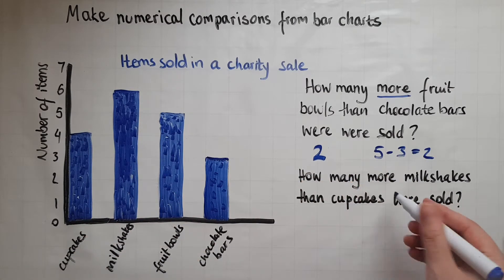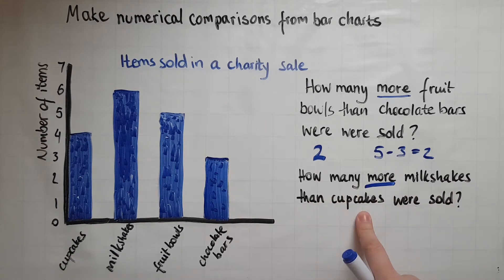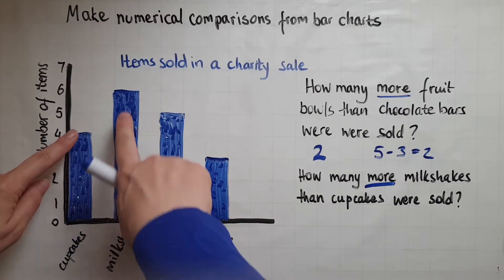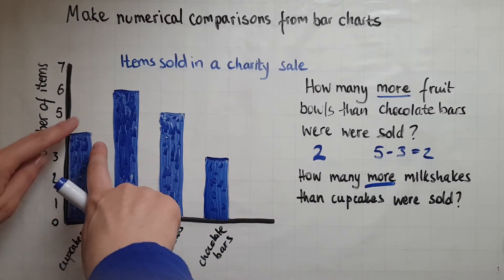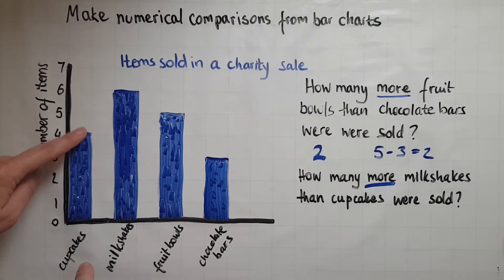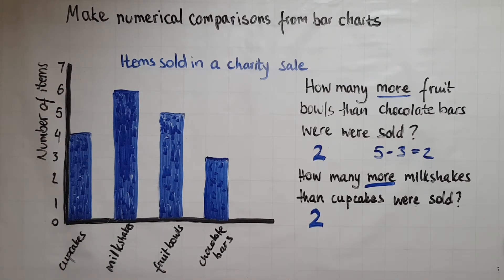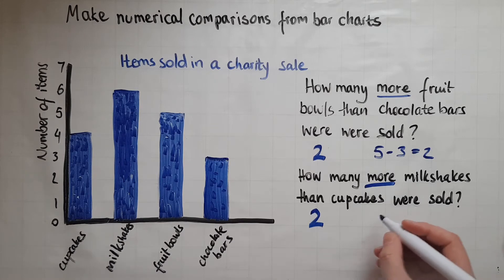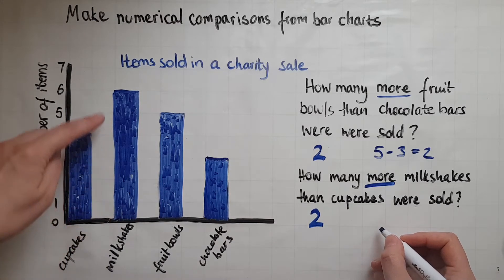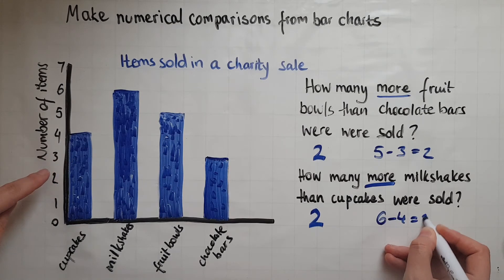How many more milkshakes than cupcakes were sold? We're looking at milkshakes and cupcakes — there are four cupcakes and six milkshakes, so there are two more milkshakes. The working out is six take away four equals two.